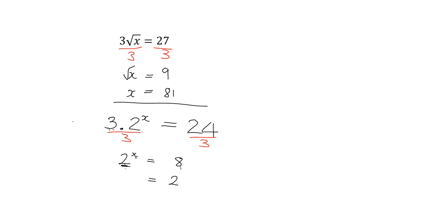You should know what 8 equals when you write it as 2 to the power of something. 8 is just 2 to the power of 3. So 2 to the x is the same as 2 to the 3, and therefore x is obviously equal to 3.